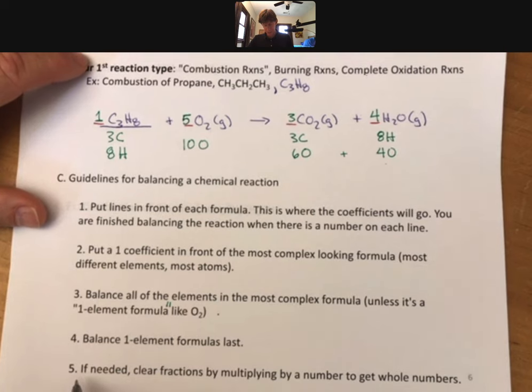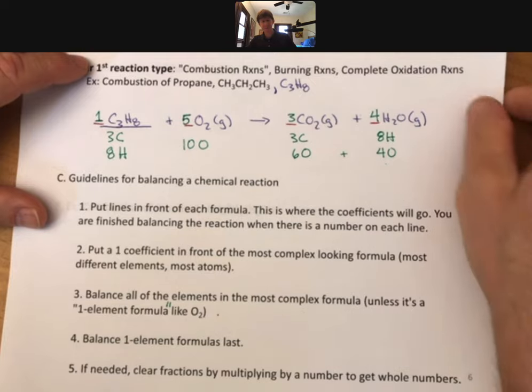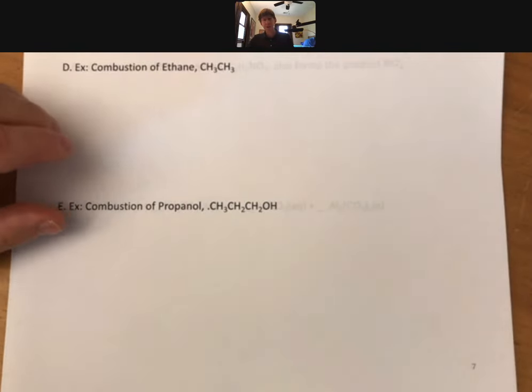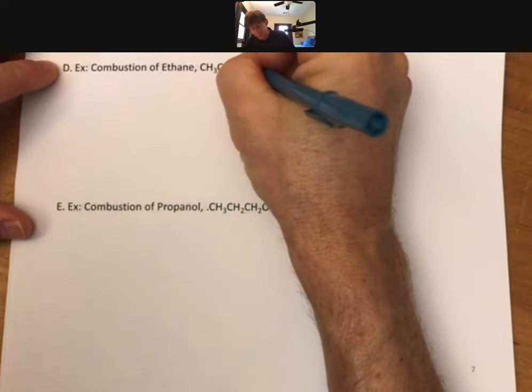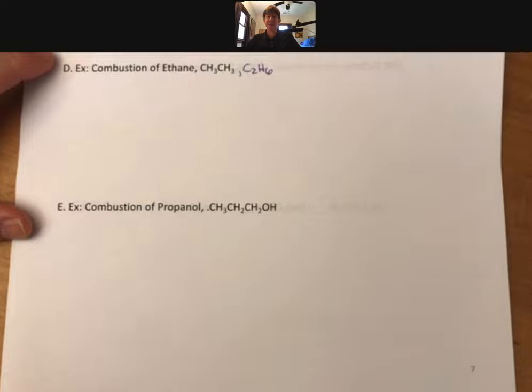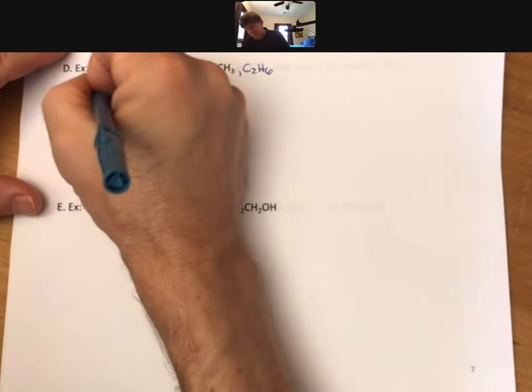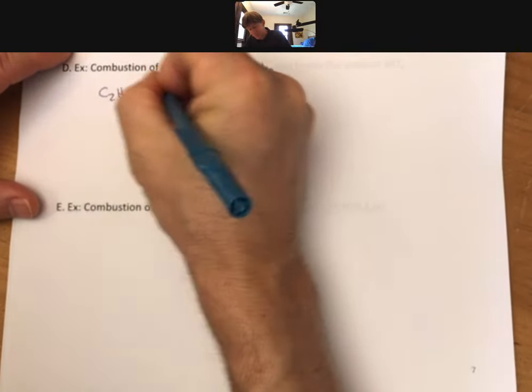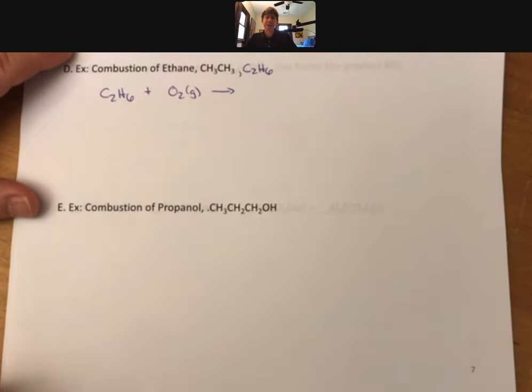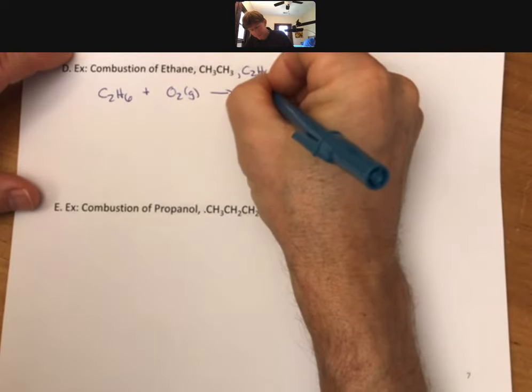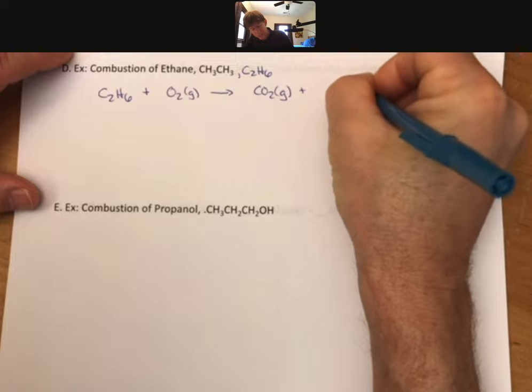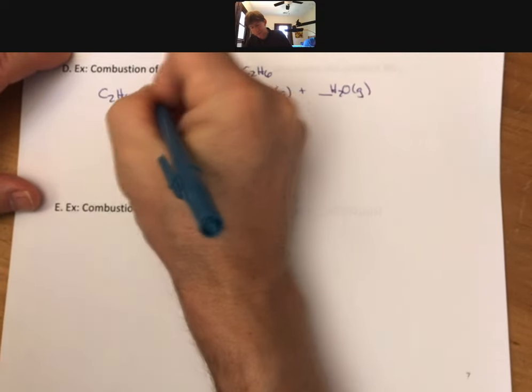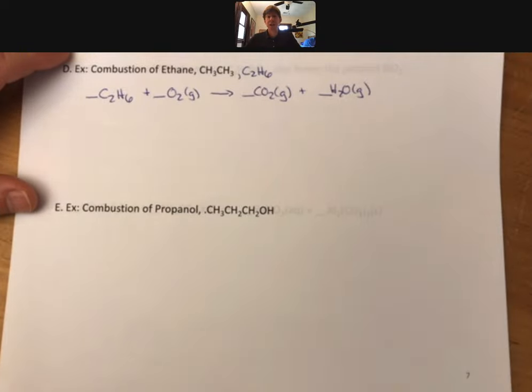If you look down here guideline number five if needed clear fractions by multiplying by a number to get whole numbers. We'll work on that in the next example, which is combustion of ethane CH3CH3 which we will abbreviate in its molecular formula C2H6. Combustion means C2H6 is our first reactant plus oxygen gas reacts to produce carbon dioxide plus H2O gas. And I'm balancing this so I'm going to put my coefficient lines straight away in front.